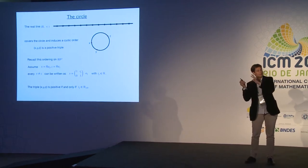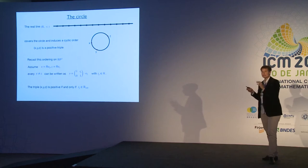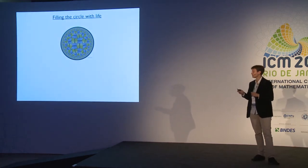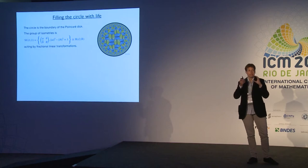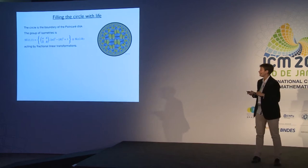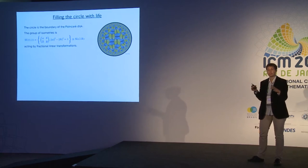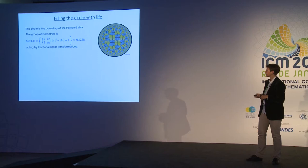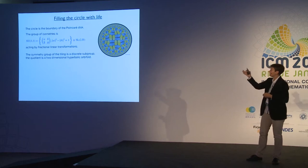I want to keep this in mind; we will come back to it later. Now I take this circle, fill it with more interesting life, and consider it as the boundary of the Poincaré disk. We take the interior of the disk endowed with a Riemannian metric of constant curvature −1. The matrix group SU(1,1) acts by isometries on the Poincaré disk via fractional linear transformations.